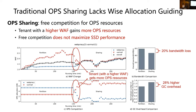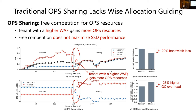An inappropriate allocation results in poor performance — for example, a 21% bandwidth difference between best and worst performance in one experiment. The traditional OPS partition scheme cannot adapt to variable workloads. As for the traditional sharing scheme that allows free competition for OPS resources, it makes wide allocation guiding difficult. In the experiment, tenants with higher write amplification gain more OPS resources, resulting in a 20% loss in bandwidth and a 28% increase in garbage collection overhead.